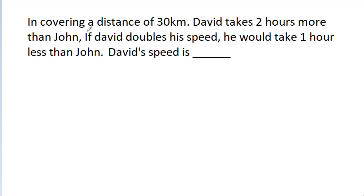In covering a distance of 30 km, David takes 2 hours more than John. If David doubles his speed, he would take 1 hour less than John. Then David's speed is?